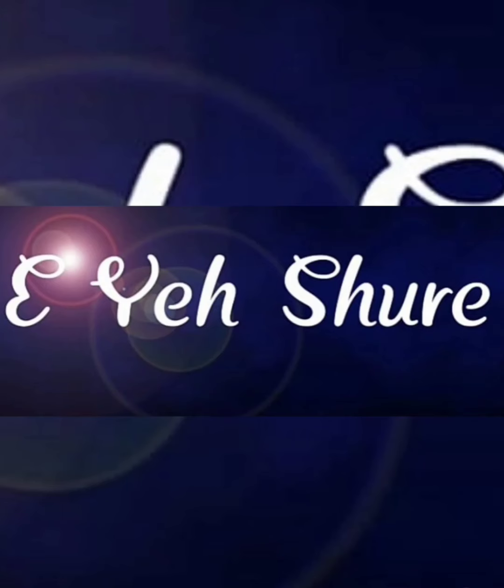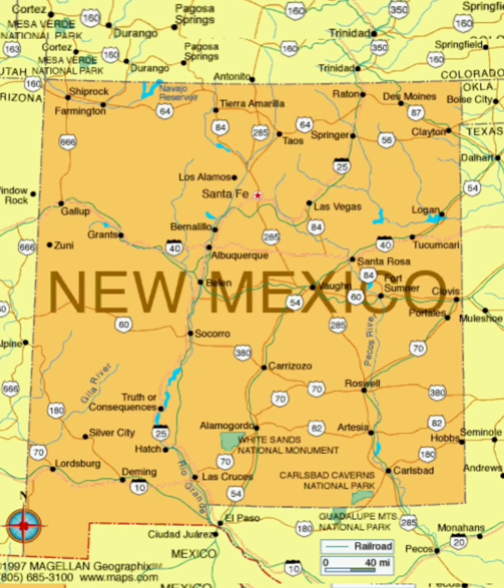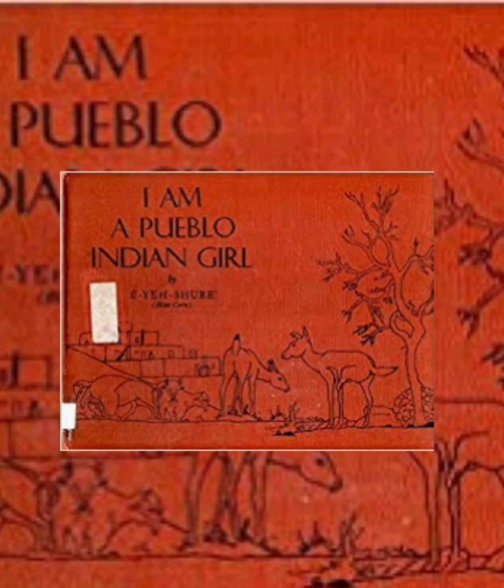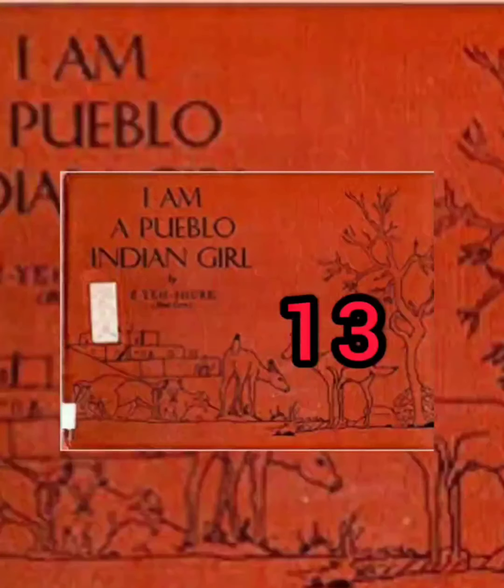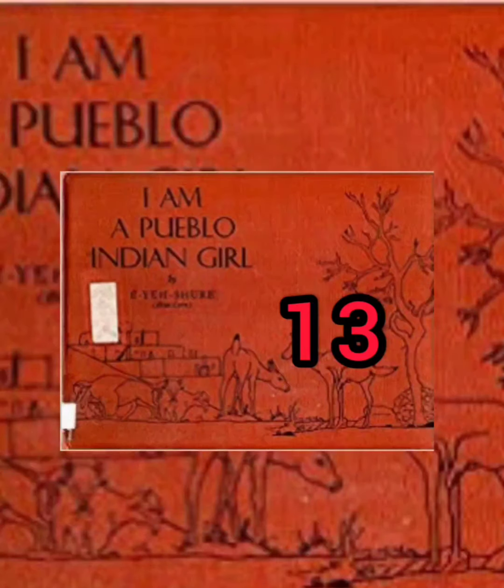She was a writer, poet and educator. She was born on 9th September 1926 in New Mexico. She died on 21st July 2014 at the age of 87. She had written her first book named 'I am a Pablo Indian Girl' at the age of 13. She also appeared in a short film.